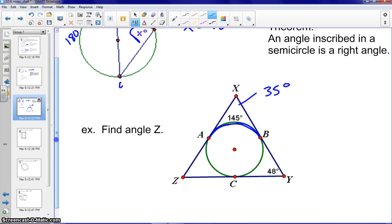And now we can just use the sum of the angles of a triangle add up to 180 degrees. Therefore, we would get angle Z to be 97 degrees. Again, a little bit of review there from section 10.5.